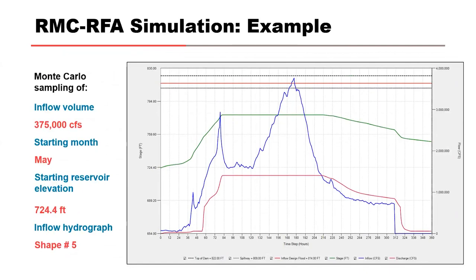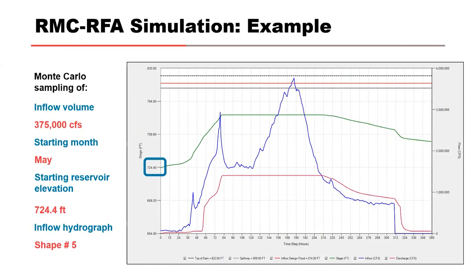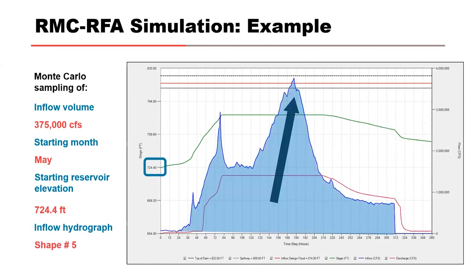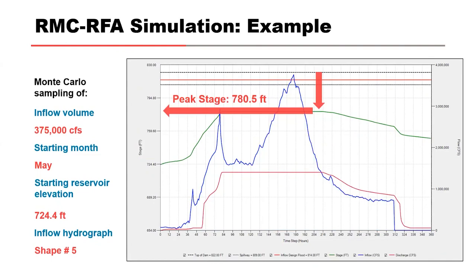The results of the simple routing procedure for our working example are shown on the output plot. The reservoir stage is shown in green, the inflow hydrograph in blue, and the reservoir discharge in red. You can see the sampled starting stage of 724 feet, scaled inflow hydrograph shape number five, and the inflow volume of 375,000 CFS. The computed peak stage for this working example is 780.5 feet.